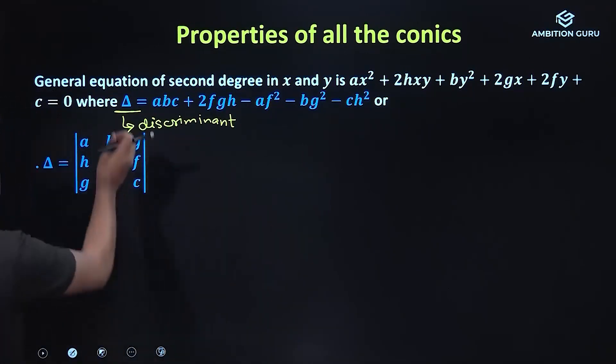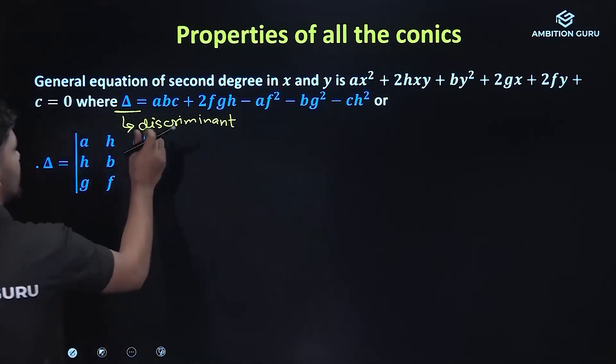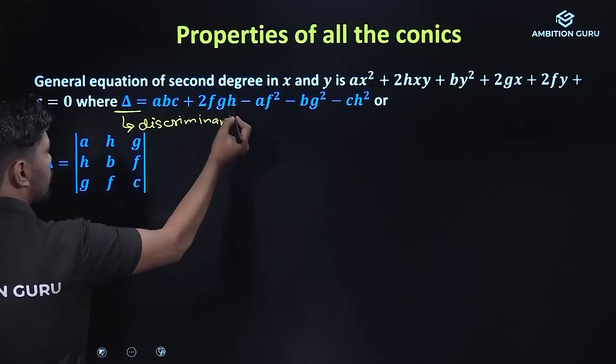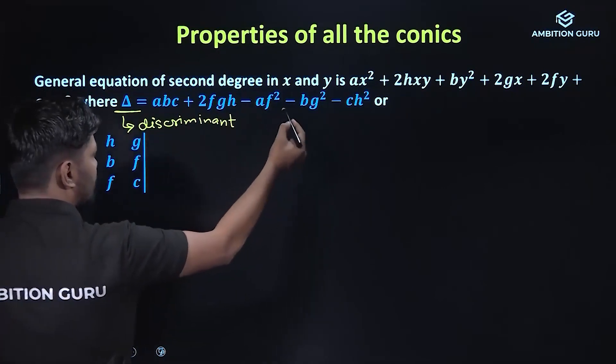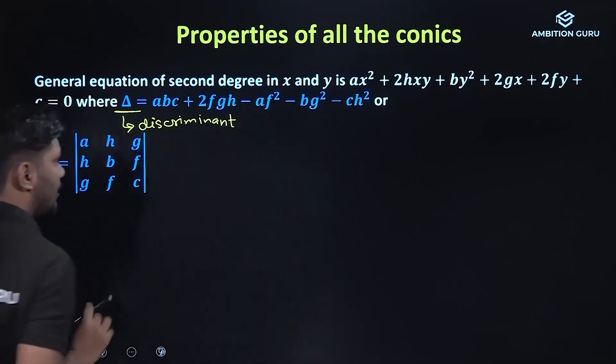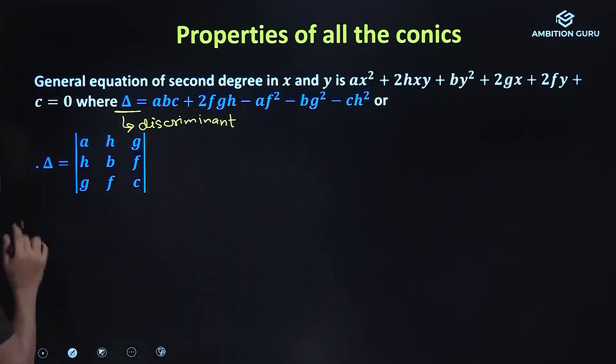Delta is the discriminant: abc + 2fgh − af² − bg² − ch². This should be memorized.